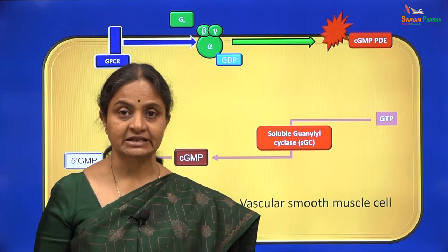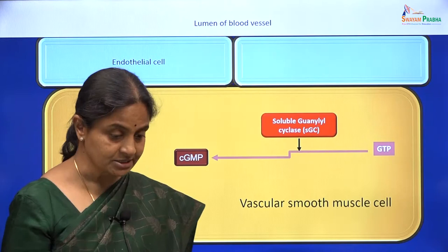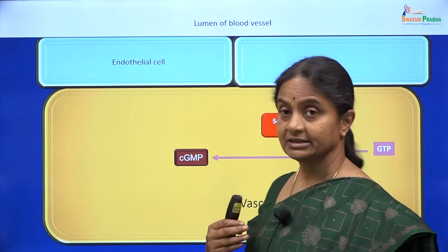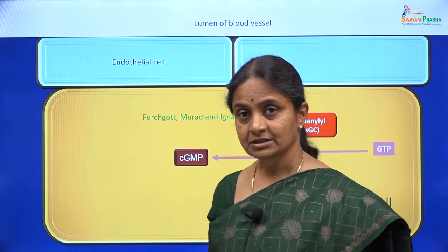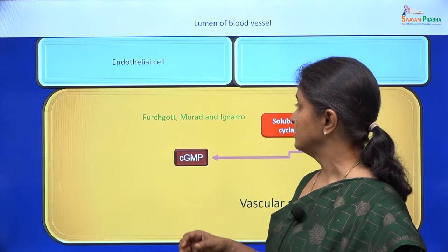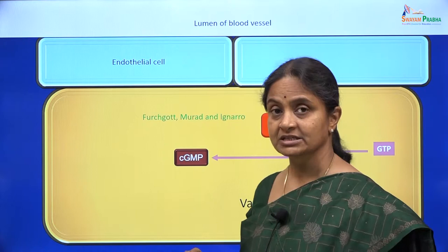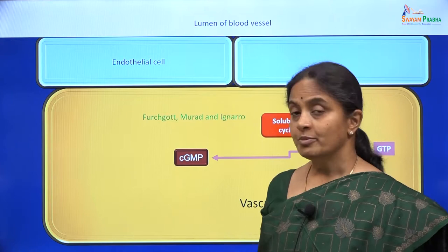We will see cGMP signaling within the vascular smooth muscle cell. When we consider the vascular smooth muscle cell, we should consider the endothelial cells alongside, because there is a lot of crosstalk going on. Three scientists won a Nobel Prize in 1998 for figuring out certain pathways working through cGMP in the vascular smooth muscle cell.